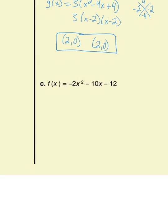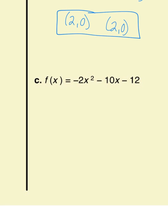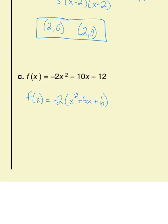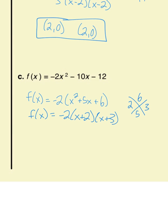Example C: first factor out what the terms have in common — they all share a -2. Factoring out -2 gives -2(x² + 5x + 6). Now using magic numbers: multiply to 6, add to 5 — that's positive 2 and positive 3. Factored form is -2(x + 2)(x + 3). Because both factors are plus, the zeros are negative: x = -2 and x = -3.